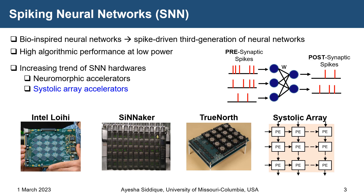Spiking neural networks are bio-inspired neural networks, inspired from the human brain. They have spike-driven computations and are the third generation of artificial neural networks. Because of being spike-driven, they achieve high algorithmic performance at low power. Inside them, when a presynaptic neuron generates a spike, it travels through the postsynaptic neurons and triggers their action potential. A spike is generated only when the membrane potential is higher than the threshold voltage VTH, and the generated spikes are multiplied with the weights for weighted activations.